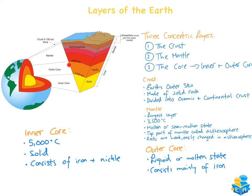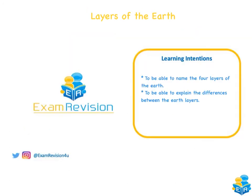The next layer is the crust — the outer skin of the earth, made of solid rock and divided into oceanic and continental crust. The three concentric layers are the crust, the mantle, and the core, which is made up of the inner and outer core. That brings us to the end of this tutorial. Our learning intentions were to name the four layers of the earth and explain the differences between them, which we can now do. Thanks guys.